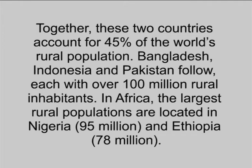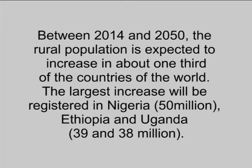Bangladesh, Indonesia and Pakistan follow, each with over 100 million rural inhabitants. In Africa, the largest rural populations are located in Nigeria — 95 million — and Ethiopia — 78 million. Between 2014 and 2050, the rural population is expected to increase in about one third of the countries of the world. The largest increases will be registered in Nigeria, Ethiopia and Uganda.